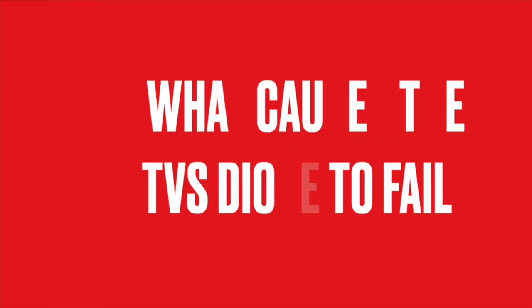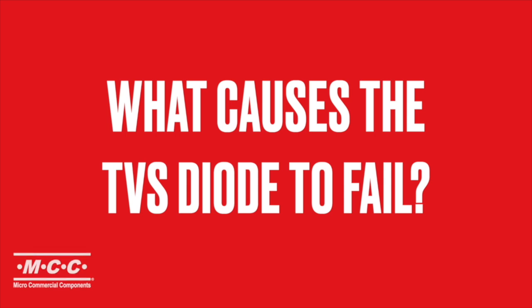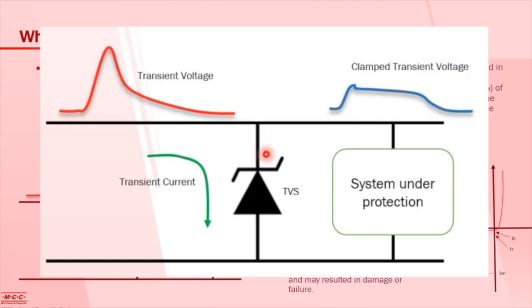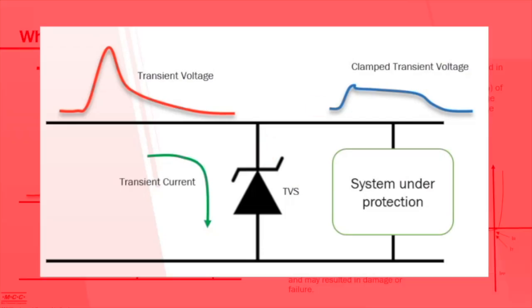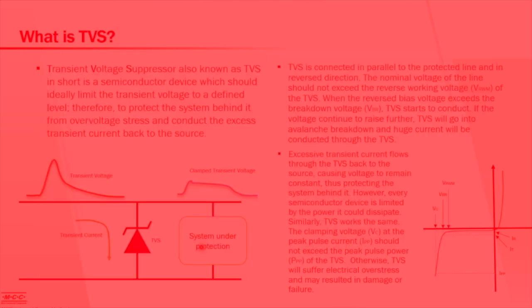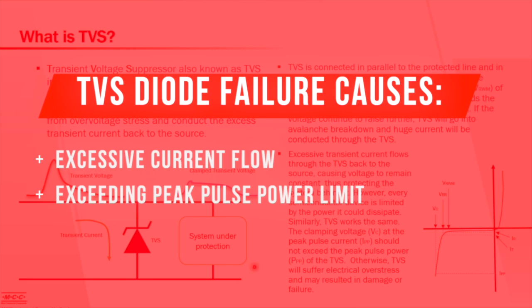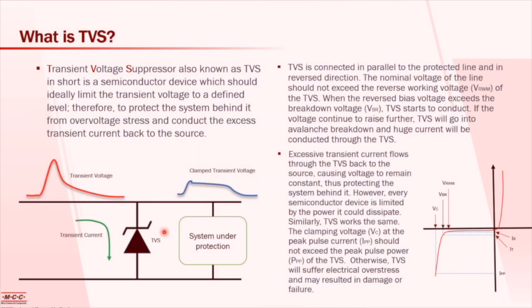What causes the TVS diode to fail? The TVS will go into avalanche breakdown. Huge current will be passed through the TVS diode. If the current passing through the TVS diode exceeds the peak pulse power of the TVS diode, it could cause the TVS diode to fail or suffer catastrophic damage.